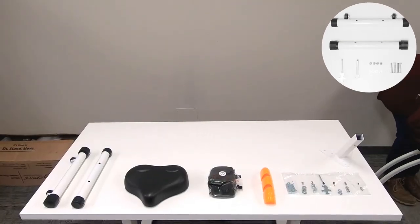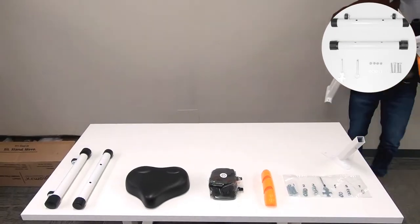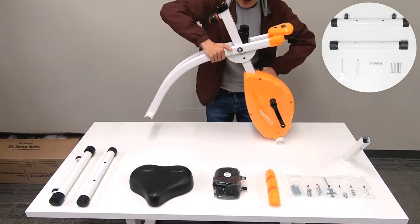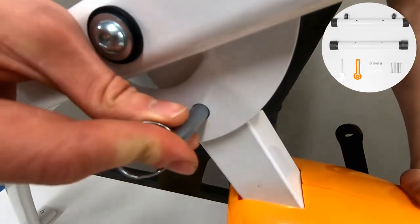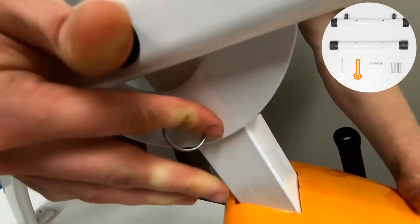Begin by placing the bike frame upright on a flat surface and adjust to the desired angle. Push the pin through the frame until secured.